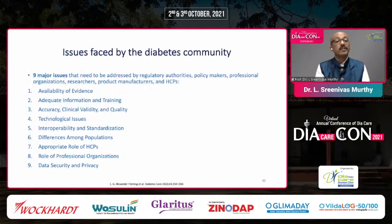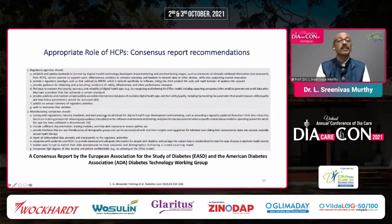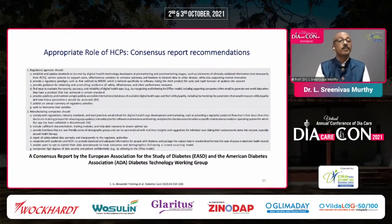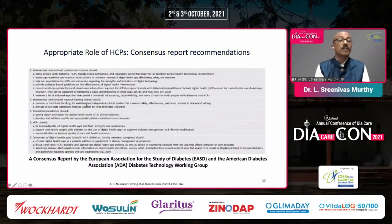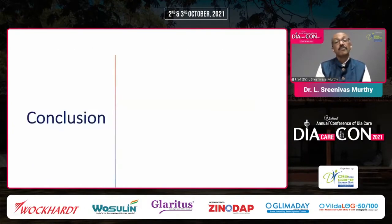Common issues faced by the diabetes technology community include availability, evidence, accuracy, validity, technological issues, population differences, appropriate role of HCPs, role of professional organizations, and data security and privacy. A series of recommendations are required to resolve these shortcomings. The European Association for the Study of Diabetes and ADA technology working group have published a consensus report recommending that HCPs establish standards, manufacturing companies comply with regulations, and national and international professional societies bring together people with diabetes and HCPs to facilitate digital health technology interventions.